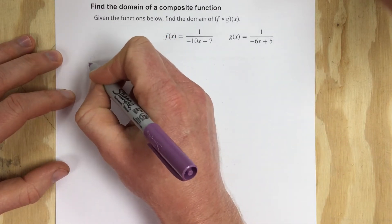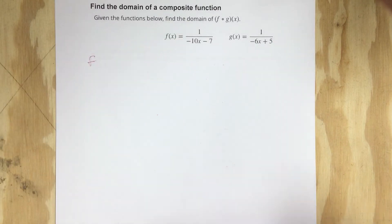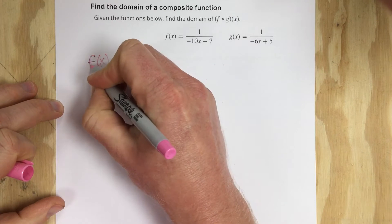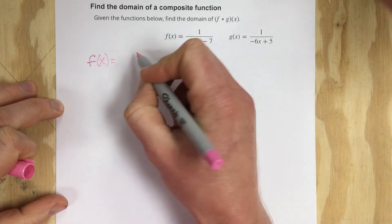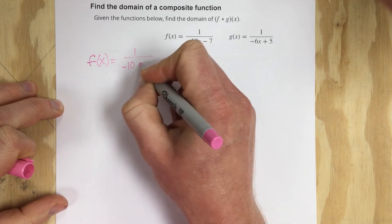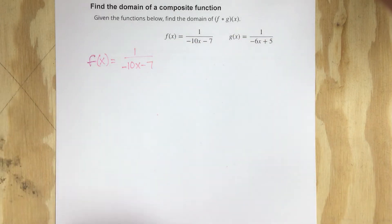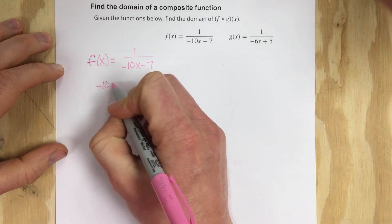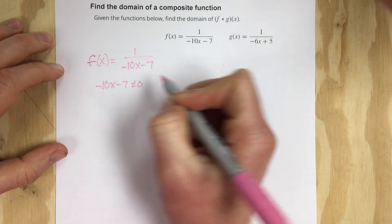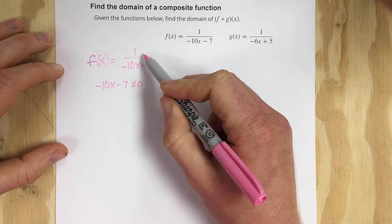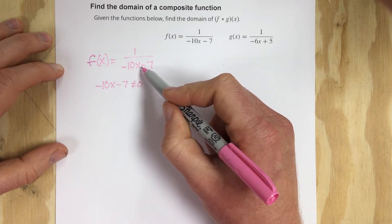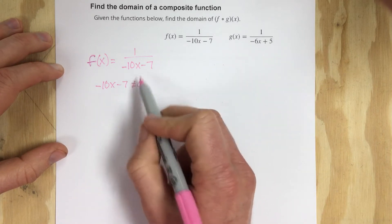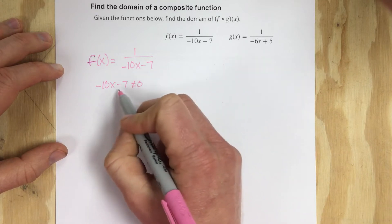So f of x is equal to 1 over negative 10x minus 7, but I cannot have a denominator of 0. So I'm going to say that negative 10x minus 7 cannot equal 0. It should be apparent why — we have a rational equation and we can't take 1 divided by 0. So I cannot have an x value in the denominator that gives me 0.